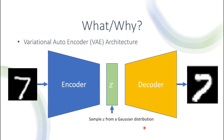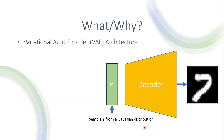As a user who wants to generate a new image, we don't really need the encoder. All we do is sample from the latent space and then plug that into the decoder, and we get a new instance taken from the same distribution as the original dataset.